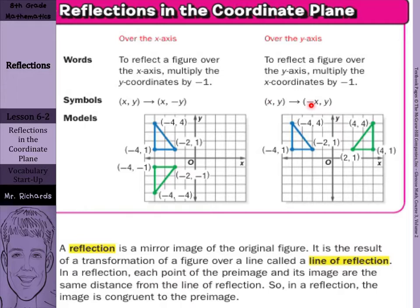A reflection is a mirror image of the original figure. It's the result of a transformation of a figure over a line called a line of reflection. In a reflection, each point of the pre-image and its image are the same distance from the line of reflection.